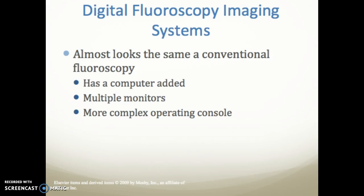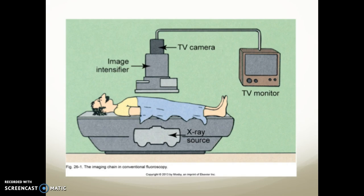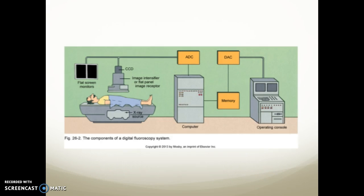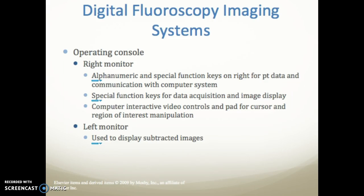Digital fluoroscopy imaging systems look almost the same as conventional except a computer is added along with multiple monitors and a more complex operating system. The operating console has alphanumeric and special function keys for patient data and communication with the computer system, as well as keys for data acquisition, image display, computer interactive video controls, and a pad for cursor and region of interest manipulation. Some may have roller balls or joysticks instead.